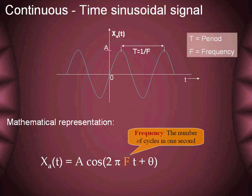For example, a 100 Hz frequency means that the sinusoid is completing 100 cycles in a second.